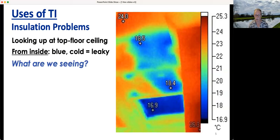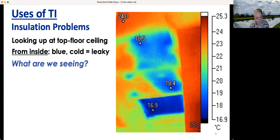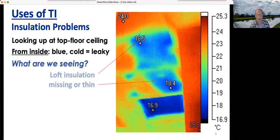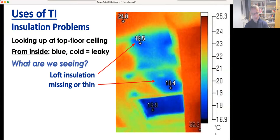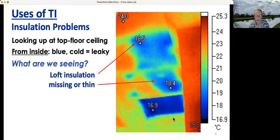Here we've got a picture looking up at the top floor ceiling — behind that surface is the loft. If things are cold, it means they're losing heat to the outside. What you're seeing is missing loft insulation, primarily. This darker area? Probably a loft hatch that's not insulated — that's quite bad.